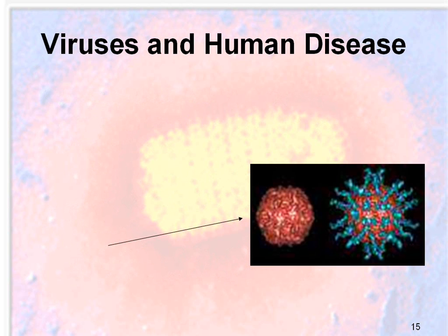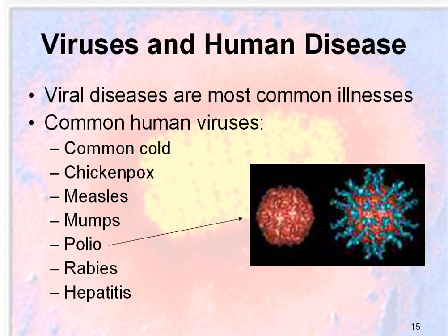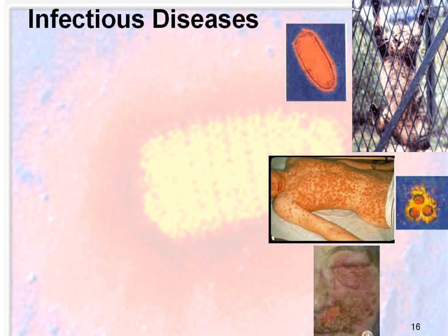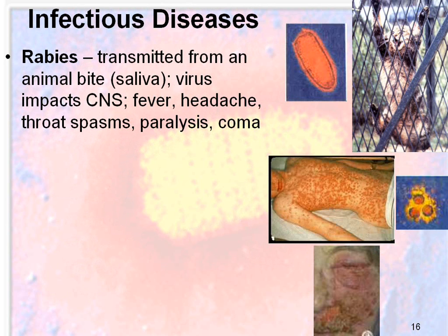Looking at viruses and some human diseases: viral diseases are the most common causes of illness, such as the common cold, chickenpox, measles, mumps, polio, rabies, and hepatitis. They cause infectious diseases like rabies, which is transmitted from an animal bite through saliva, and then the virus affects the central nervous system, causing fever, headache, throat spasms, paralysis, and coma. Up here is an image of the rabies virus and a rabid cat.